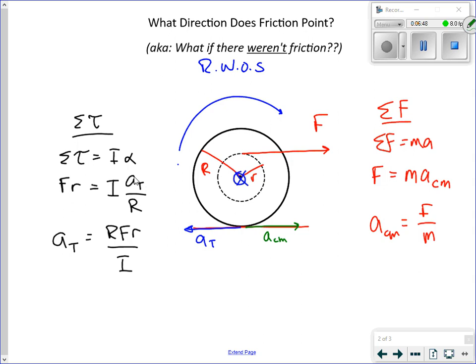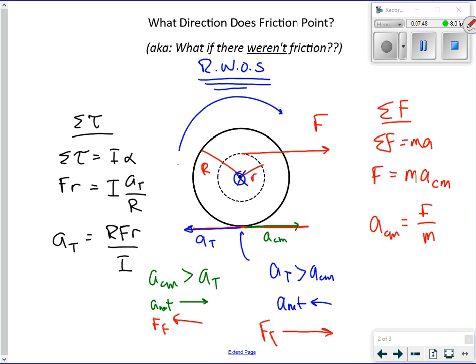And the deal is, let's say if ACM is greater than AT, that means that the system, this object would tend to accelerate, I'll say, a net would be to the right. And therefore, friction would be to the left. That's sort of scenario one. Well, if AT would be greater than ACM, then that says that A net would, if not for friction, be to the left. And we mean of that place. But you know that that place does not accelerate relative to the floor without slipping. And so that means that the friction force would point to the right.